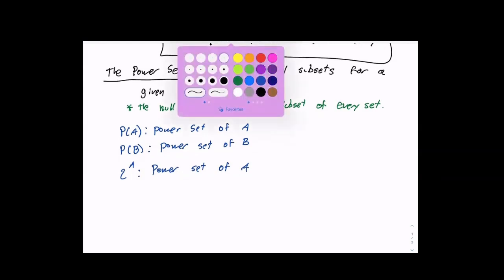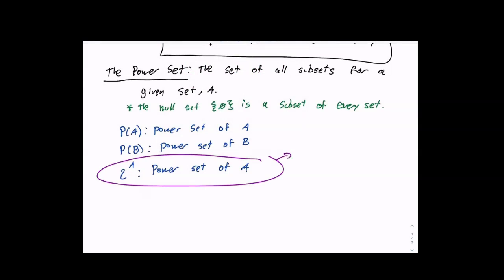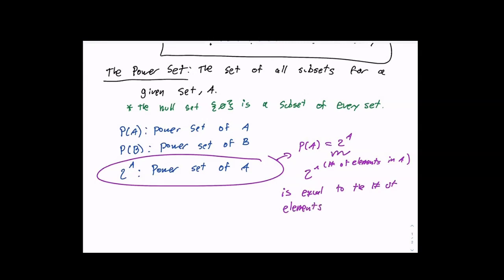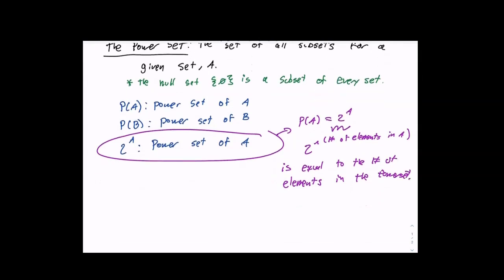P of A is the same thing as two to the A. The reason is because two raised to the number of elements in A is equal to the number of elements in the power set. When we talk about the number of elements, that's also referred to as the cardinality, but we'll get to cardinality very shortly.